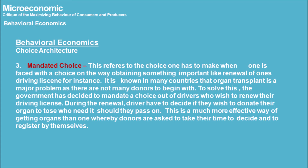Choice Architecture 3: Mandated Choice. This refers to the choice one has to make when obtaining something important, like renewal of one's driving license. Organ transplant is a major problem in many countries as there are not enough donors. To solve this, the government mandates a choice for drivers renewing their license — they must decide if they wish to donate their organs to those who need it should they pass on. This is a much more effective way of obtaining organ donors than asking people to register voluntarily by themselves.